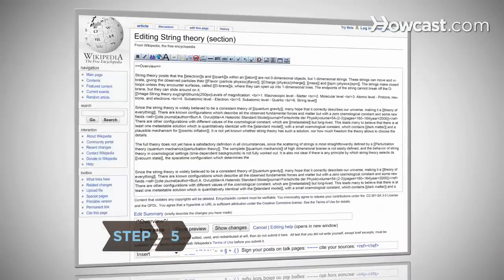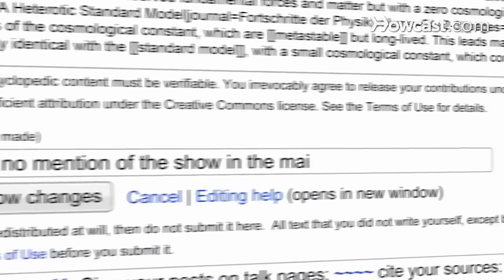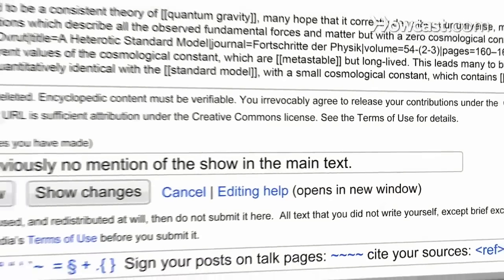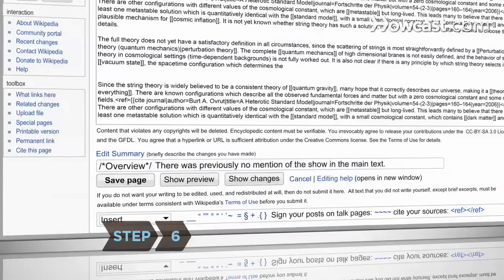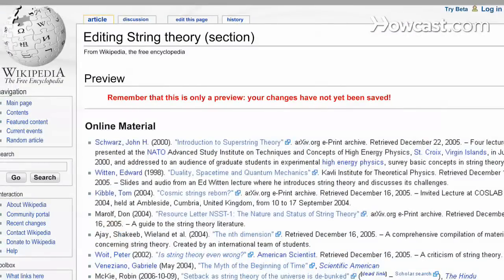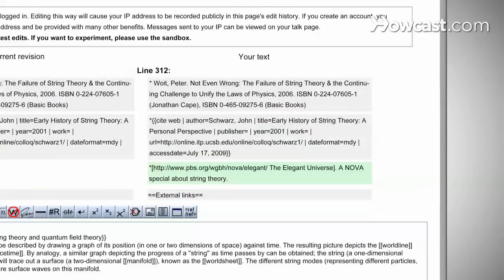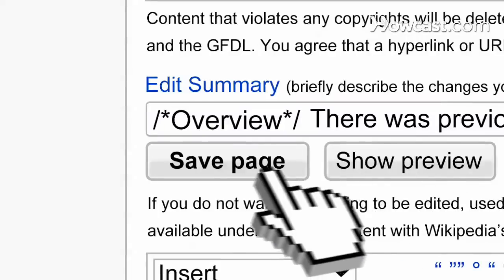Step 5. Briefly explain your changes in the Edit Summary box at the bottom. Your explanation can run up to 200 characters. Step 6. Review your changes by hitting the Show Preview tab at the bottom. If you want to compare your changes to the text you altered, hit the Show Changes button. Once you're satisfied with your work, hit the Save Page button.